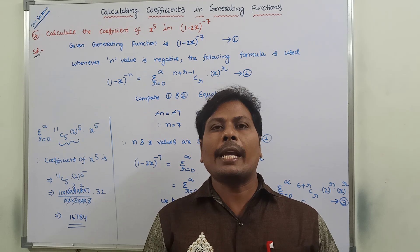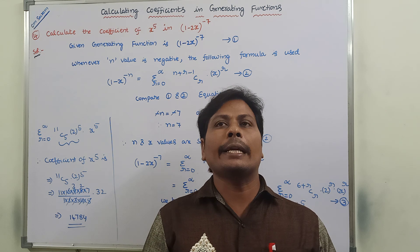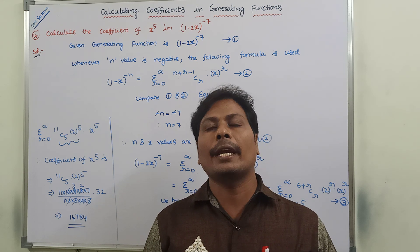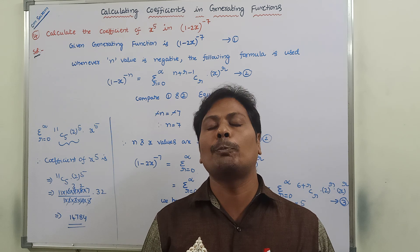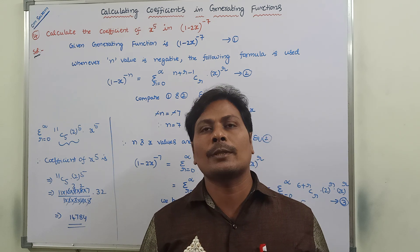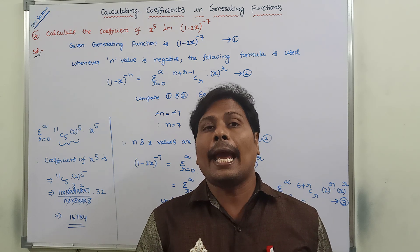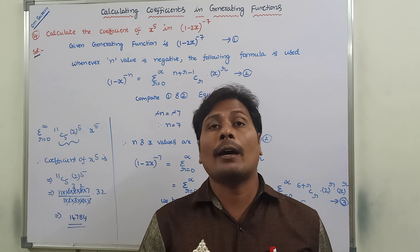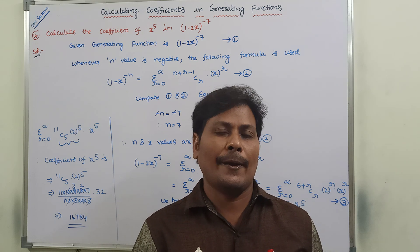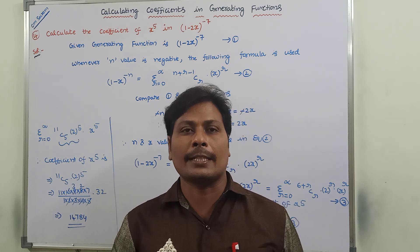Hi friends, today I am giving a lecture on how to calculate the coefficient of x power 5 in (1 minus 2x) whole power minus 7. In the previous videos, we have already discussed about 3 different example problems. Please refer those problems. In this video, we have to solve another different example problem.